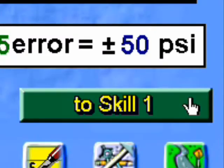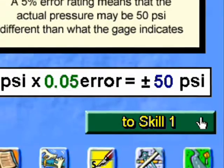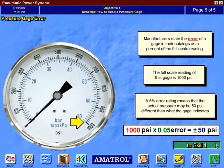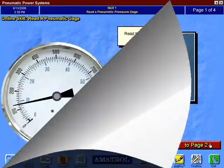The continue buttons in the objectives take the student to a skill at the most appropriate time for them to practice a procedure or test their knowledge right after they learn it.